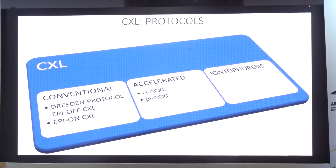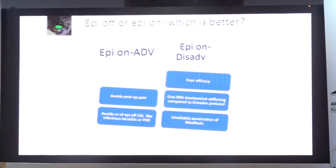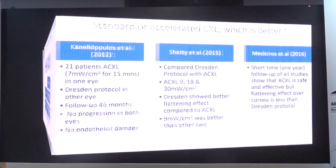Various protocols exist — conventional, accelerated, or iontophoresis — which will be covered in detail by others. Comparing standard versus accelerated protocols, various studies have been done, but the standard or conventional Dresden protocol has been found to be more efficacious than accelerated. Among accelerated protocols — 9 mW/cm² for 10 minutes, 18 mW/cm² for 5 minutes, or 30 mW/cm² for 3 minutes — the 9 mW/cm² for 10 minutes protocol has been found to be the most efficacious.